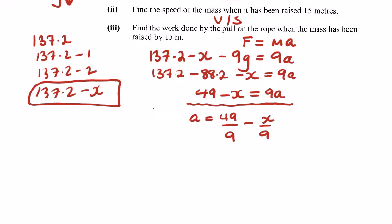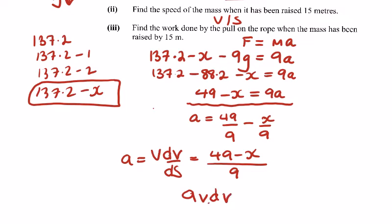We are looking at vdv/ds for acceleration. vdv/ds is what acceleration is equal to. That equals, well I'll put 49 minus x on top over 9. So 9vdv, if I cross multiply by 9, will equal 49 minus x with respect to x. I'll change my s to x at this point.